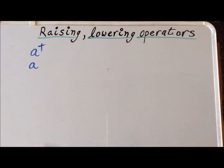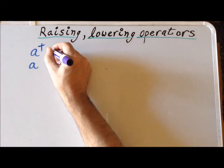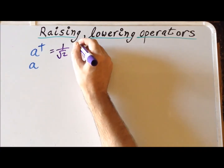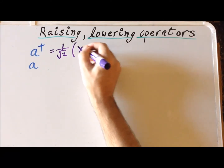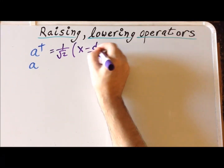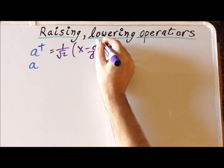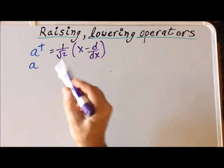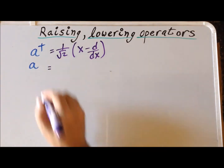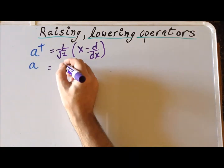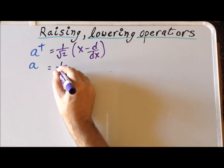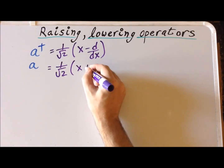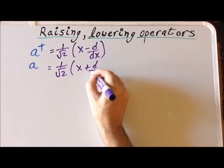The raising operator a dagger is defined as 1 over the square root of 2 times x minus d/dx. Similarly, the lowering operator a is defined as 1 divided by the square root of 2 times x plus the derivative with respect to x.